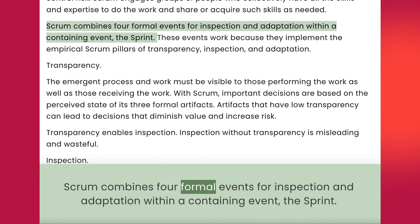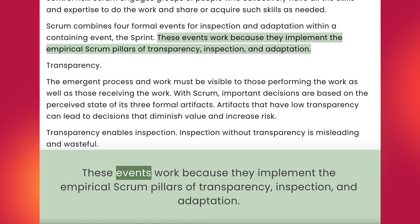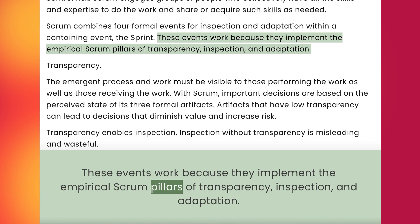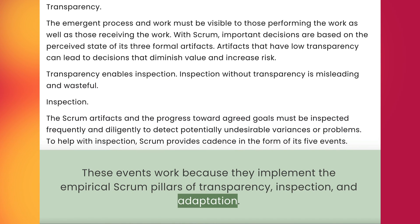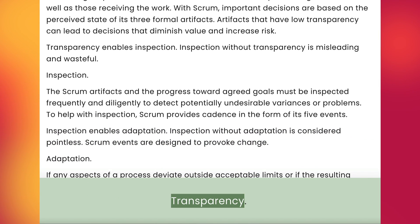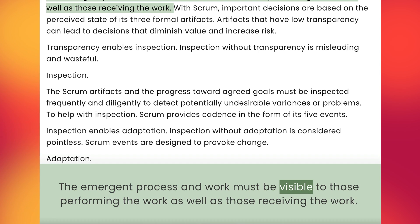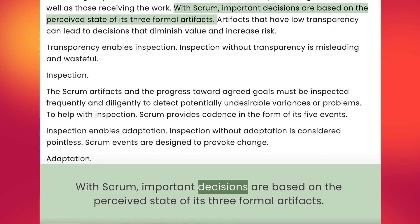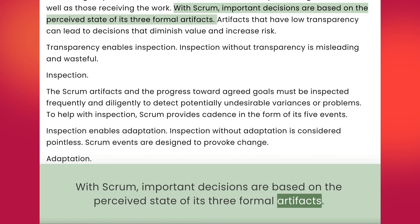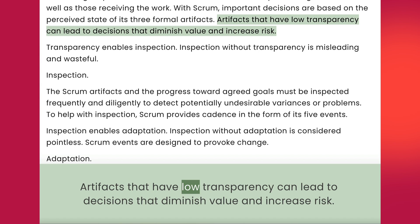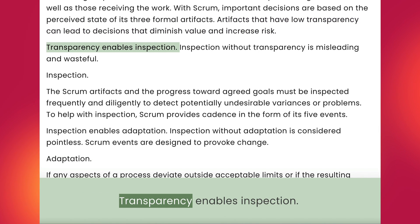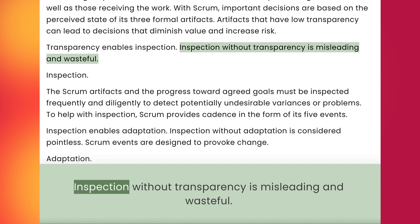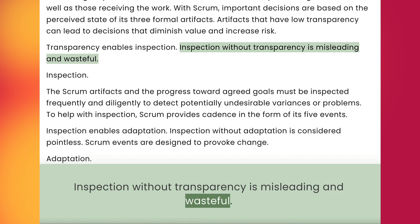Scrum combines four formal events for inspection and adaptation within a containing event, the sprint. These events work because they implement the empirical Scrum pillars of transparency, inspection, and adaptation. Transparency: the emergent process and work must be visible to those performing the work as well as those receiving the work. With Scrum, important decisions are based on the perceived state of its three formal artifacts. Artifacts that have low transparency can lead to decisions that diminish value and increase risk. Transparency enables inspection.